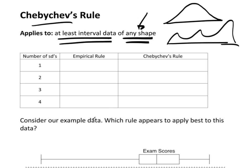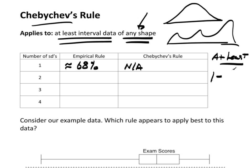So what does Chebyshev's rule say? At one standard deviation, the empirical rule says approximately 68% of the data. Chebyshev's rule is not applicable there — instead, it's a calculation: you will have at least one minus one over k squared, where k equals the number of standard deviations. So if k equals one, that's one minus one over one squared, which is one minus one, which equals zero.